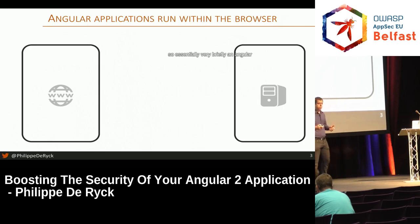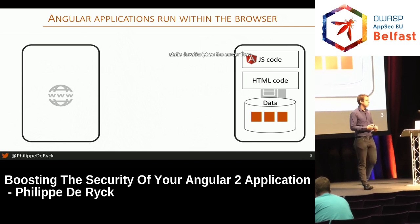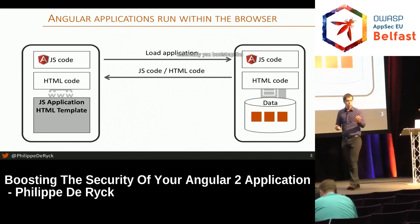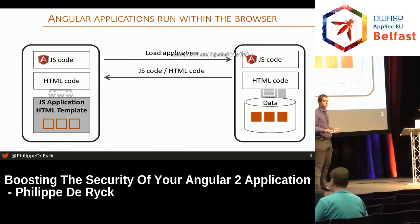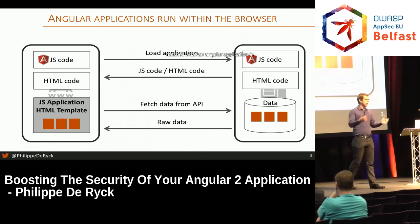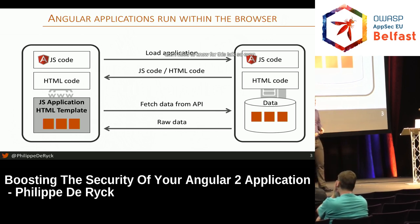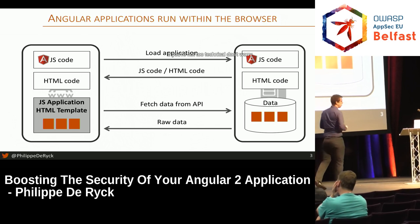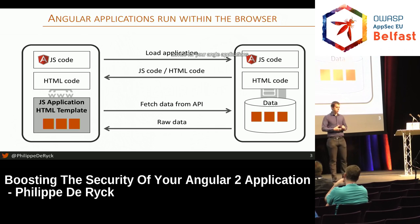Essentially, an Angular application has static HTML and static JavaScript on the server. You load it in the browser, bootstrap the application, and you have a template with data binding. Data will be fetched from an API and injected into that template. Even if you're not too technical, don't worry — you'll walk away with practical security advice for your Angular applications.